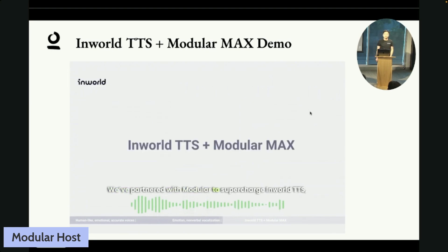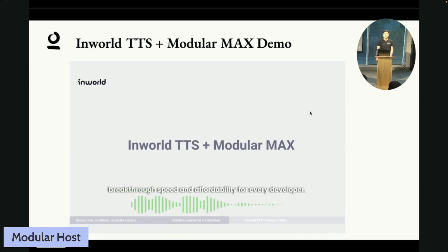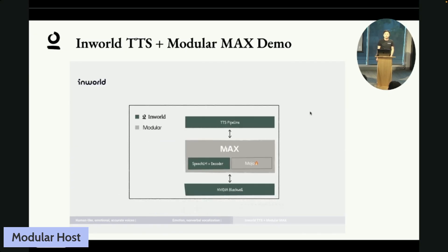We've partnered with Modular to supercharge InWorld TTS, combining our state-of-the-art voice quality with Modular's world-class serving stack to deliver breakthrough speed and affordability for every developer. At the heart of the InWorld TTS serving stack are two foundational technologies. Max is a universal high-performance AI serving framework built to deliver state-of-the-art performance across GPU and CPU platforms. It combines advanced batching, graph-level optimizations, memory planning, and fine-grained kernel scheduling in a single containerized runtime with an OpenAI-compatible serving endpoint. Mojo is a systems programming language focused on AI kernels, bridging the gap between Python's ease of use and speed-of-light performance, offering fine-grained control over memory layout, parallelism, and vectorized execution.